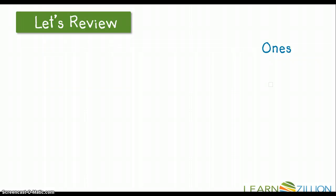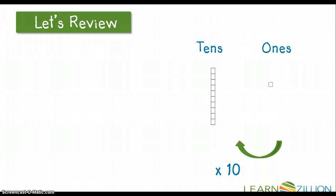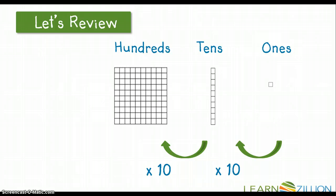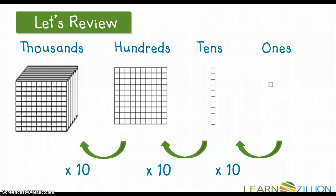Let's review. We've been looking at base 10 blocks all week long. You know that the ones are signified by a small cube, and when we multiply 1 by 10 we get 10. The tens are signified by a rod. When we multiply 10 by 10, we get 100, and the hundreds are represented by a flat. When we multiply 100 by 10, we get 1,000, and 1,000 is represented by that large cube of our base 10 blocks.